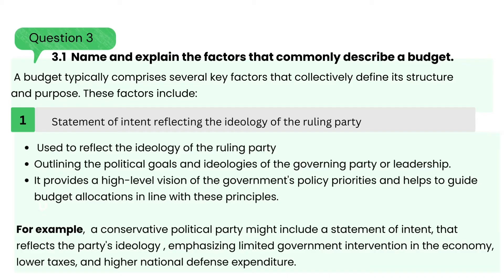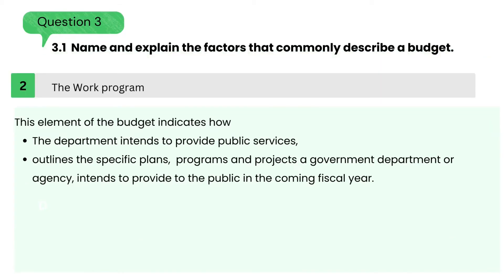For example, a conservative political party might include a statement of intent that reflects the party's ideology, emphasising limited government intervention in the economy, lower taxes, and higher national defence expenditure. 2. The Work Programme — this element of the budget indicates how that department intends to provide public services, by outlining the specific plans, programs and projects a government department or agency intends to provide to the public in the coming fiscal year.